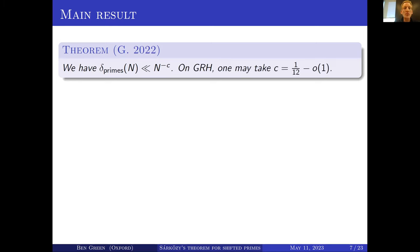If you allow yourself to assume GRH, you can actually take that constant C to be something reasonable — about one twelfth, anything less than one twelfth.